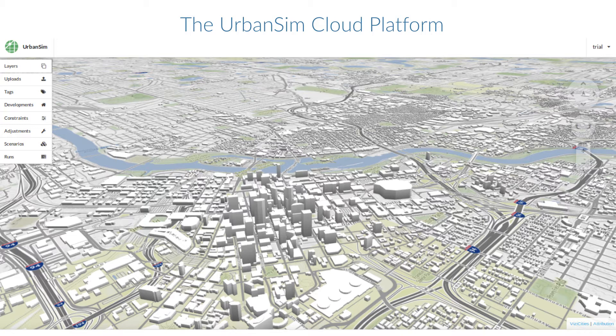Urban systems are very difficult to predict. They're very complex, dynamic, and consistently change over time. They're hard to predict, especially when we're trying to deal with hard-to-anticipate technological and cultural changes. But UrbanSim and models like it help give us an analytic tool that we can use to come to a quantitative common ground to start policy discussions.